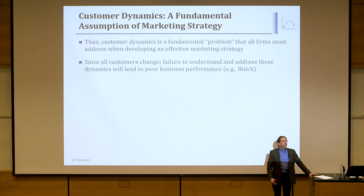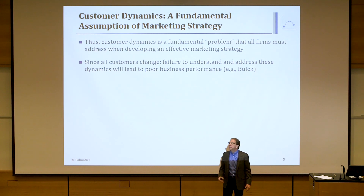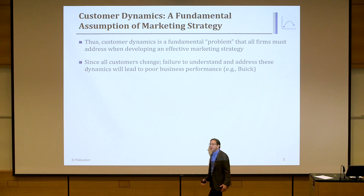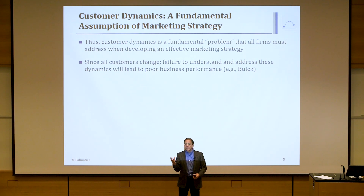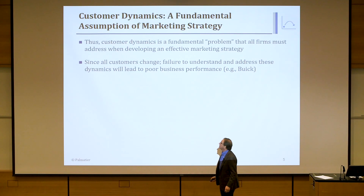If you're a 25-year-old consumer wanting to buy a car, does it impact you if everybody you've seen driving a Buick is 60? The brand got associated with older people. When younger people stop buying, your whole product portfolio starts aging. Ultimately you're in trouble because your customers will die and you'll have no customers left. So you have to manage customer dynamics. Market principle two: all customers change and effective marketing strategy must manage customer dynamics.